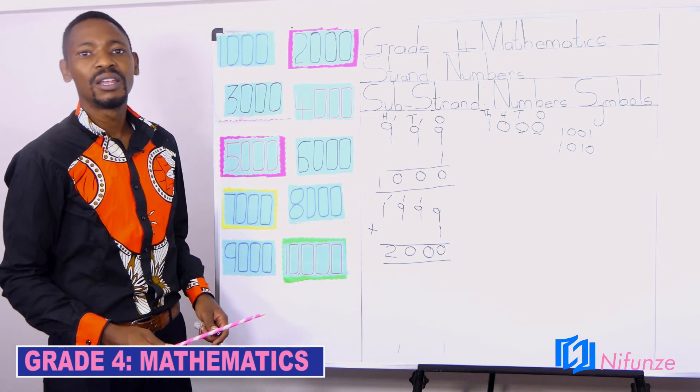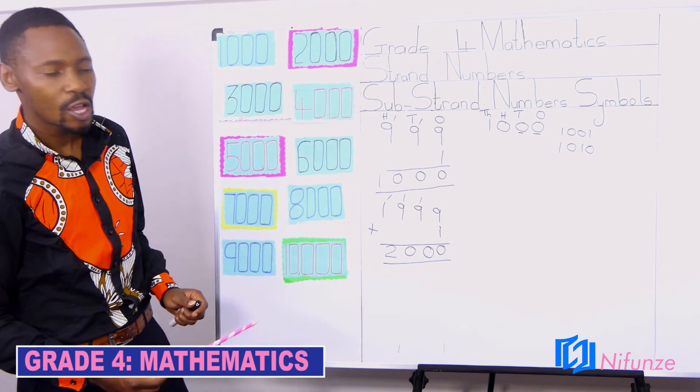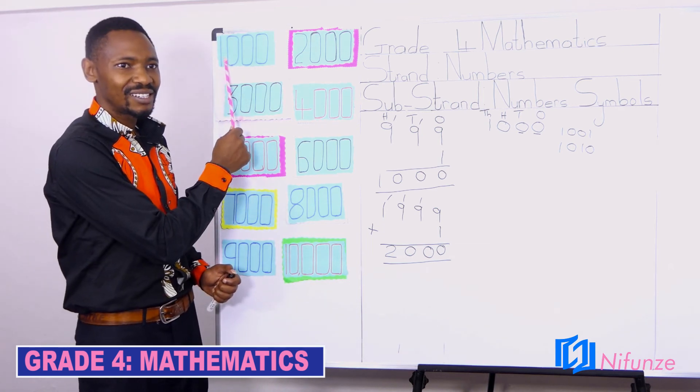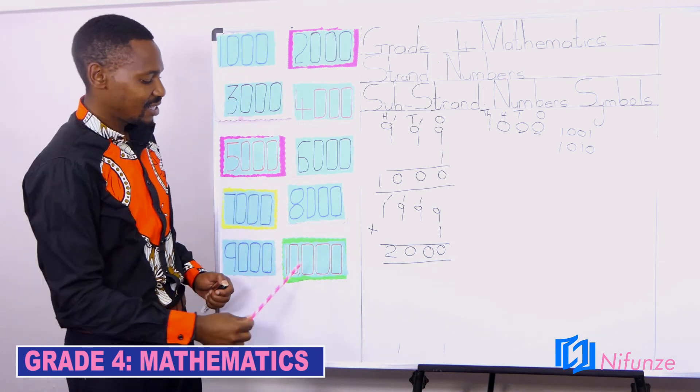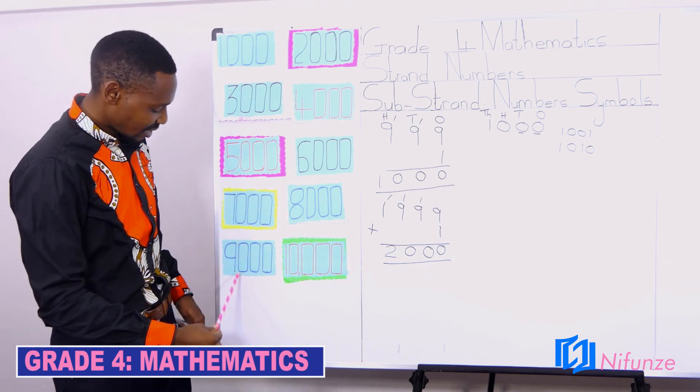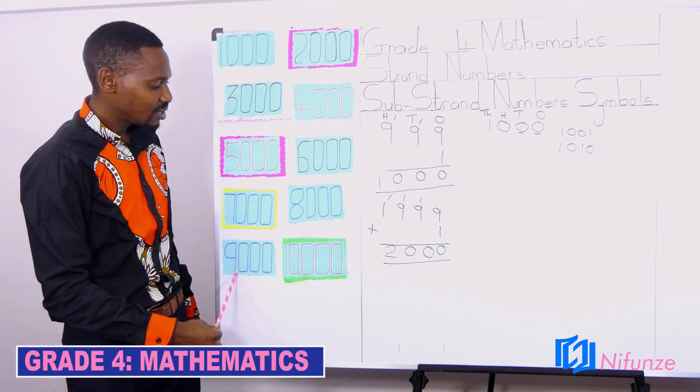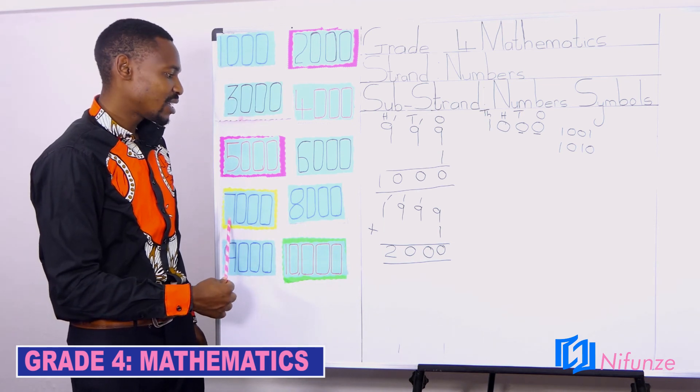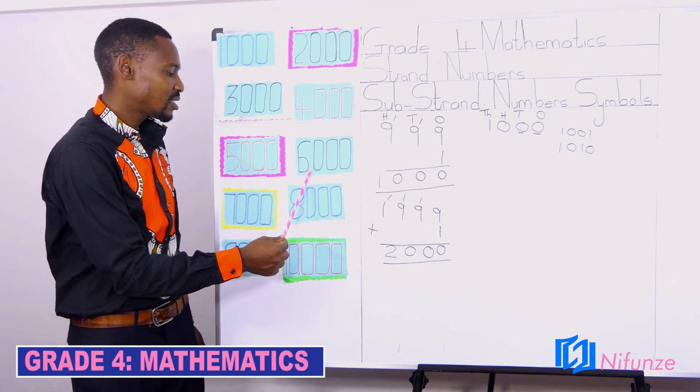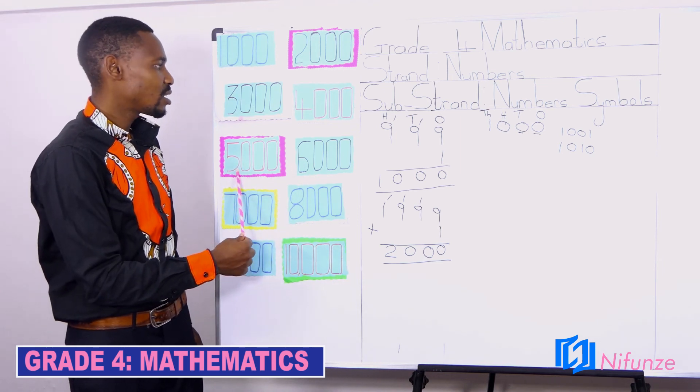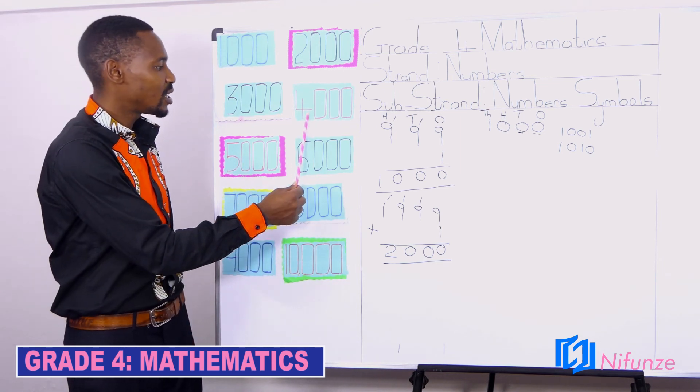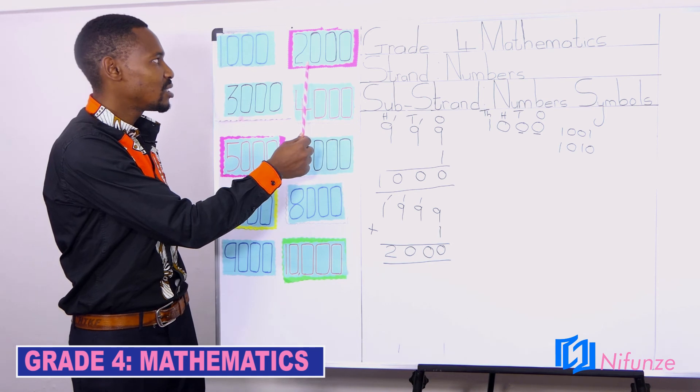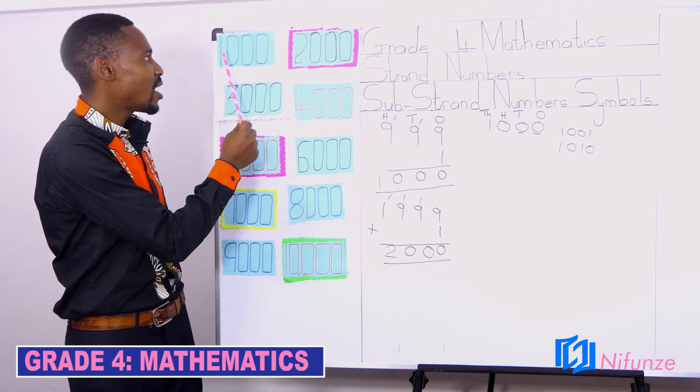Can we try to read reverse? Reverse means we are going to start from 10,000 to 1,000. We start together. 10,000, 9,000, 8,000, 7,000, 6,000, 5,000, 4,000, 3,000, 2,000, 1,000.